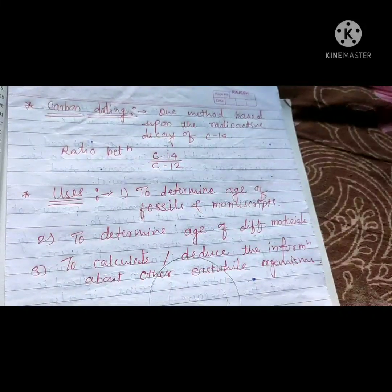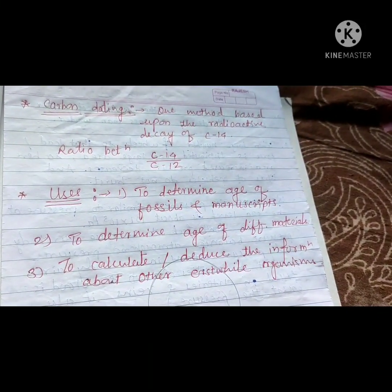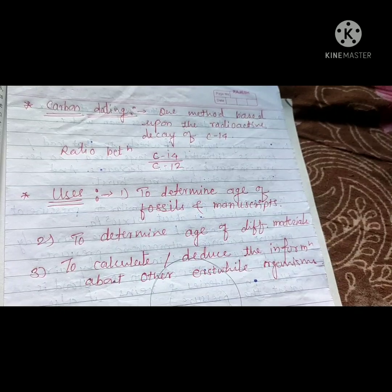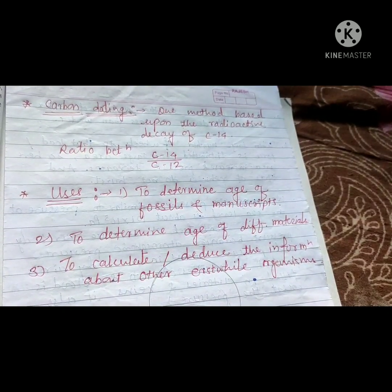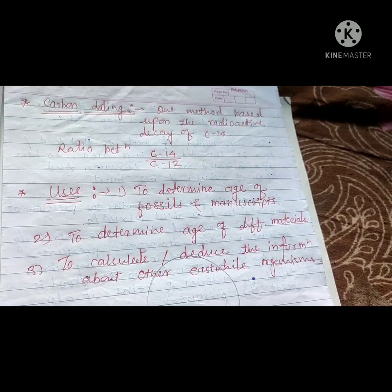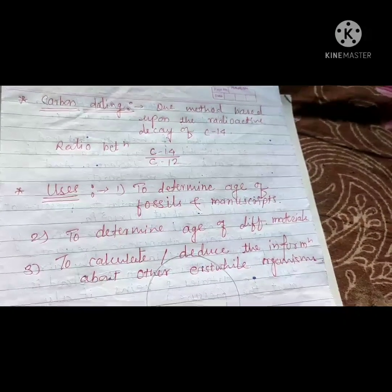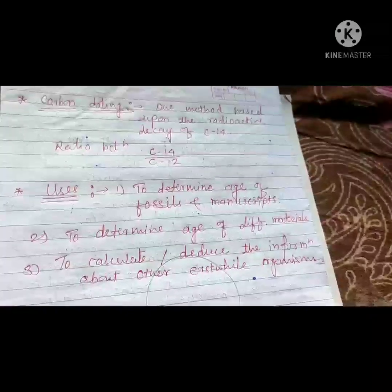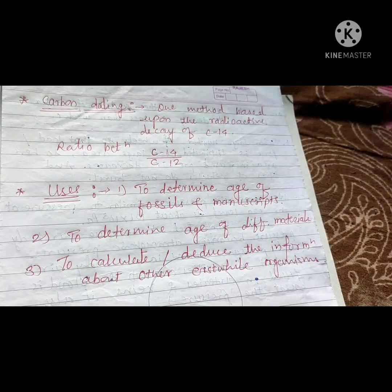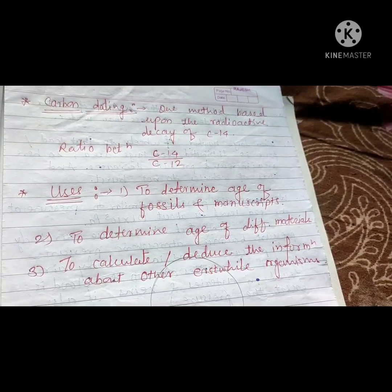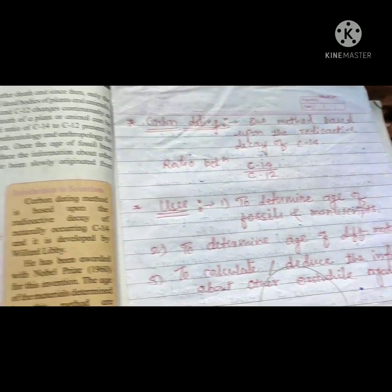Our next point is carbon dating. What is carbon dating? It is a very important method which is based upon the radioactive decay of carbon-14. In this method of carbon dating, it is based on the carbon consumption of animals and plants.